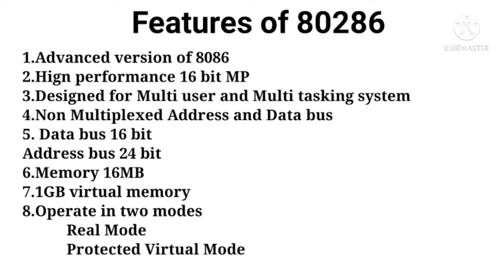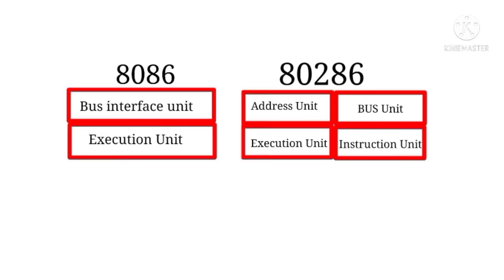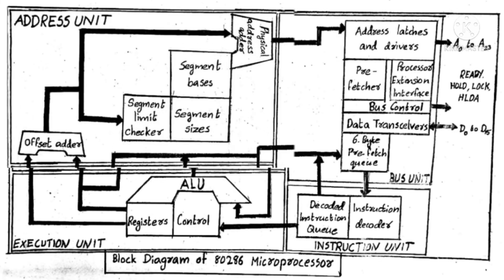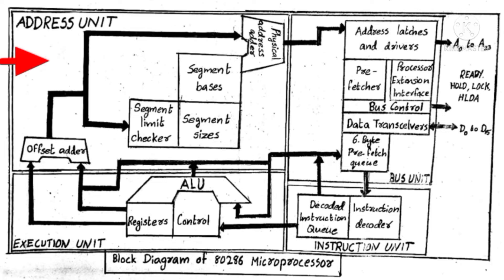These are the main features of 80286. Next we will see the internal architecture of 80286. We already know that 8086 has two different blocks — a bus interface unit and an execution unit. But in the case of 80286, it has four blocks. The first block is called the address unit, the second block is called the bus unit, the third block is called the instruction unit, and the fourth block is called the execution unit.